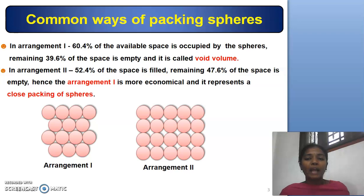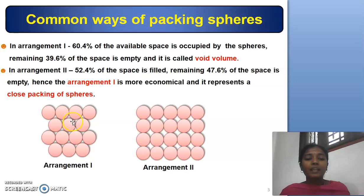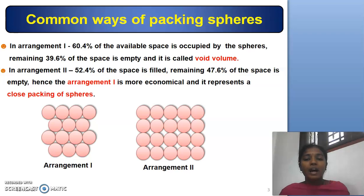There are two basic common ways of packing spheres: arrangement 1 and arrangement 2. In arrangement 1, 60.4% of the available space is occupied by the spheres and the remaining 39.6% of the space is empty, and it is called void volume. In arrangement 2, 52.4% of the space is filled and the remaining 47.6% of the space is empty. Comparing arrangement 1 and arrangement 2, arrangement 1 is more economical and it is represented as very close packing of spheres when compared to arrangement 2.